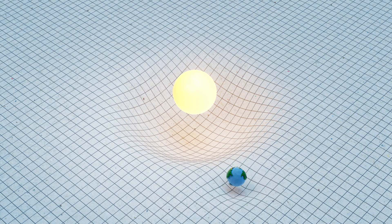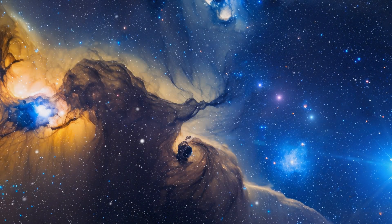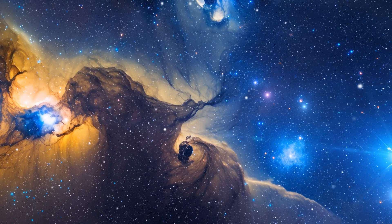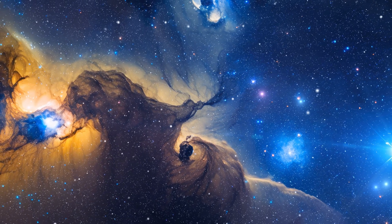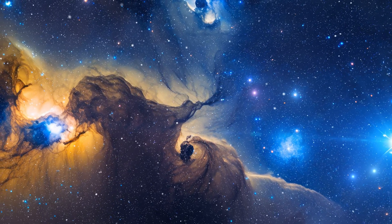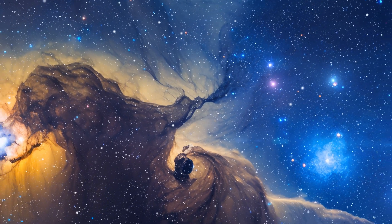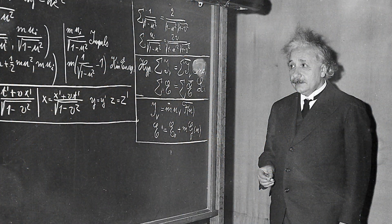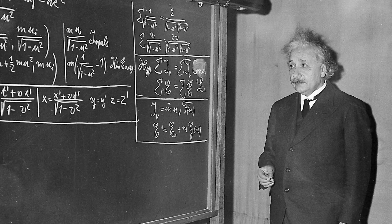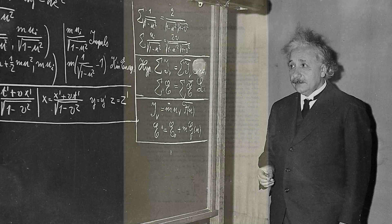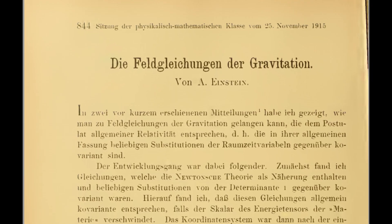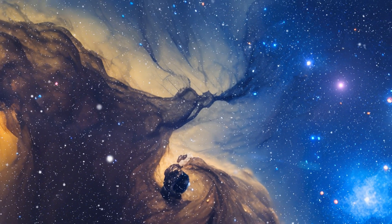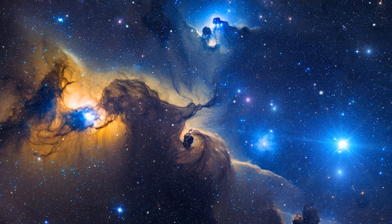When Einstein was working on his theories of relativity at the beginning of the 20th century, the scientific community generally accepted the view that the universe was static. It was neither expanding nor contracting, but had a stability to it. This was Einstein's view as well. When he eventually developed and published his theory of general relativity in 1915, it was found that it predicted a universe that would contract due to all of the mass of the universe pulling on itself.